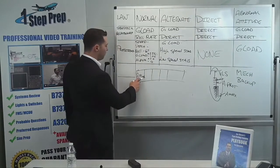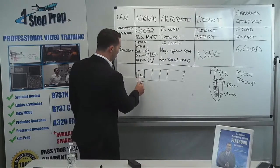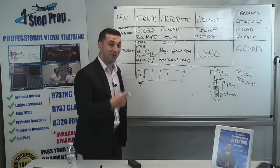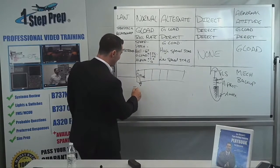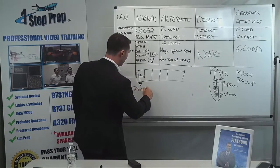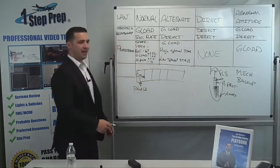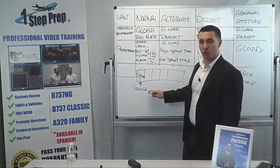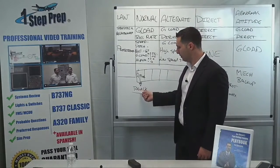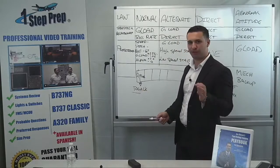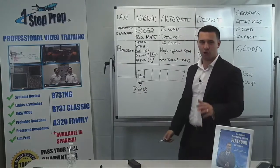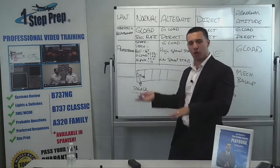What's going to happen is alpha floor will give birth to, or it's going to default into toga lock — T-O-G-A-L-K. Toga lock means toga power is locked.